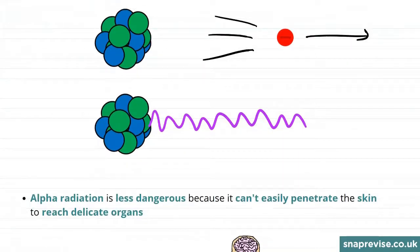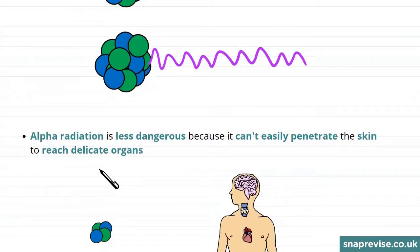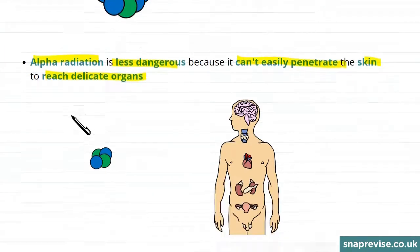So why are the alpha particles less dangerous? Well, there's a couple of reasons. The main reason is that alpha radiation is less dangerous because it can't easily penetrate the skin to reach our delicate organs.